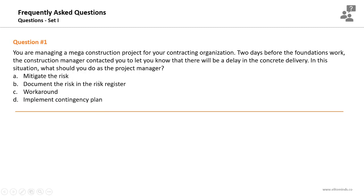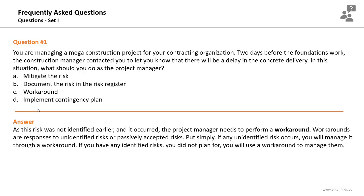To think about this situation: you received a call informing you of a delay in concrete delivery. You cannot mitigate this risk — it was not identified earlier. It's an issue, not a risk. There is no probability of occurrence; the delay already happened. You cannot document it in the risk register either. If the construction manager had said there might be a probability of delay, the answer would be to document it in the risk register. But since the delay happened, you need to conduct a workaround. You cannot implement a contingency plan because it was not planned for earlier.